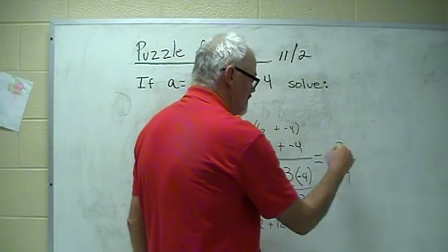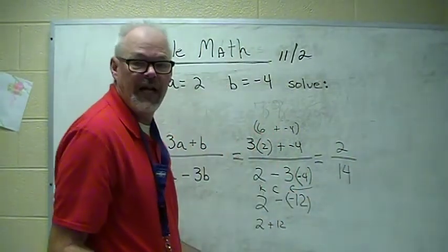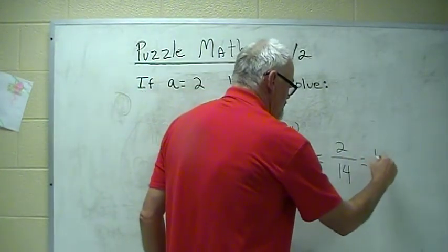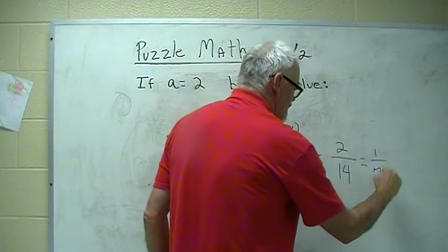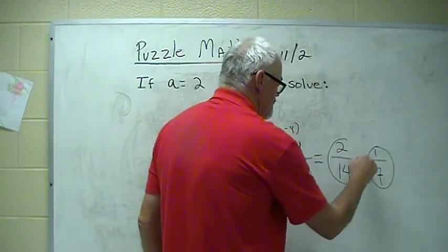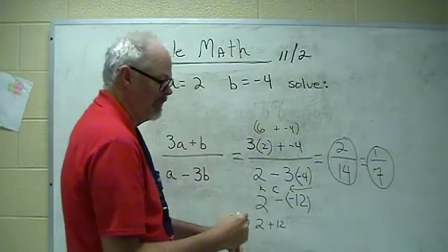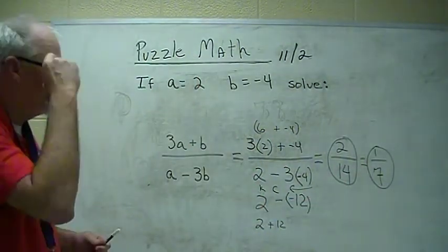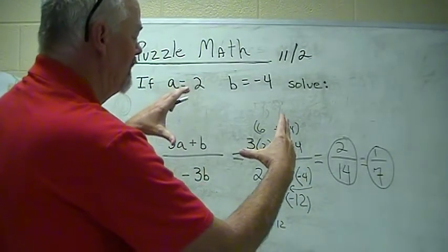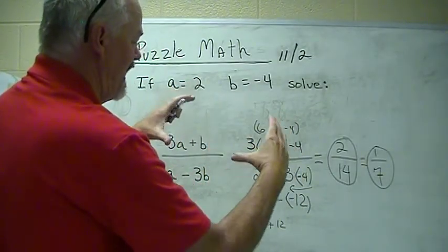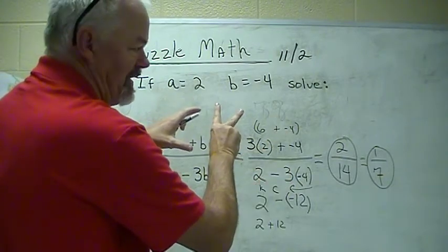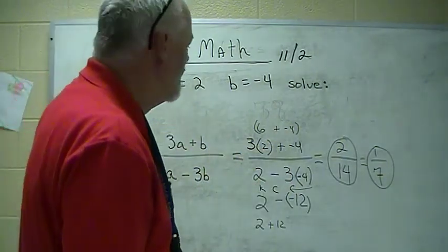Our answer is 2 14ths. And, if you wanted to reduce it or simplify it, 2 goes into 2 one time, goes into 14 seven times. I would take either answer, because I didn't ask you to simplify it. But, those are the same number, right? If you had a pie and cut it into 14 pieces, and had two of them, you'd have that much. If you had the same pie, and you only cut it into seven pieces, and you had one piece, you'd have the same piece. It'd be the same size.